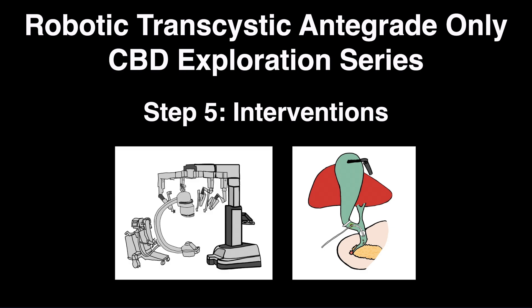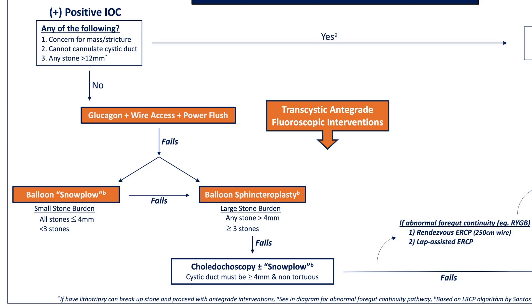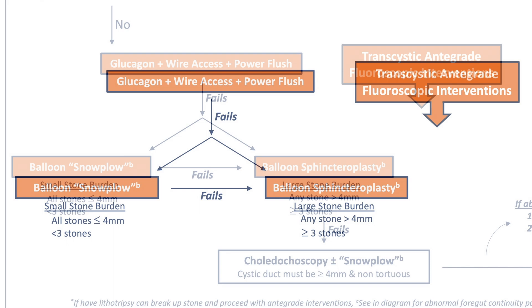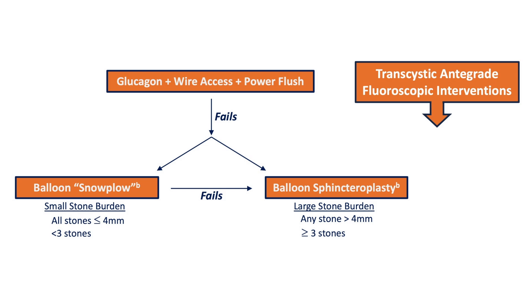Robotic Transcystic Antigrade Only Common Bile Duct Exploration Series — Interventions. Once you have a positive IOC that meets criteria for interventions and you have first attempted glucagon, wire access, and a power flush, the next step in the Transcystic Antigrade algorithm is either a balloon snowplow or sphincteroplasty.